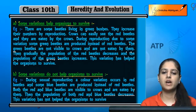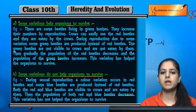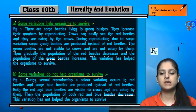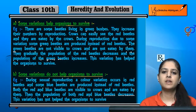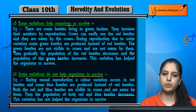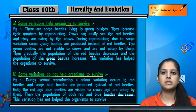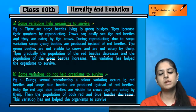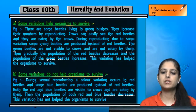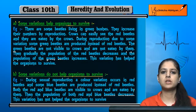Zaroori nahi hai ki har variation survival mein help kare. Lekin aise bohot variations hain jo survival mein help kar rahe hain. For example, hum ne beetles ka example liya hai — beetles red ho sakti hain, green ho sakti hain, blue ho sakti hain. Red generally woh hote hi hain. Variation kya hai? Unka green hona, unka blue hona. Red toh crows ka lieta hai. Green crows nahi kha pate, toh woh survive kar jaate hain. But blue jo beetles hain, unko bhi crows kha lete hain — toh yeh blue wala variation helpful nahi hai, but green wala variation is helpful. So this is all about the variation in heredity.